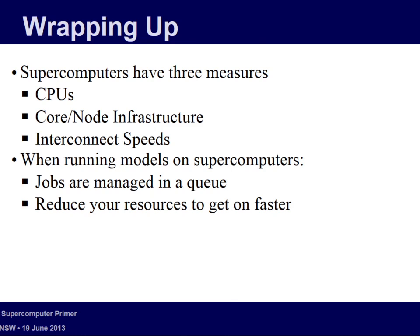Q&A: There's no real difference between CPU and core in everyday usage, but technically a CPU can have multiple cores. Raijin has 54,000 CPUs but many more cores — Vayu has about 2,000 CPUs but roughly 11,000 cores, since each CPU chip has multiple cores inside it.